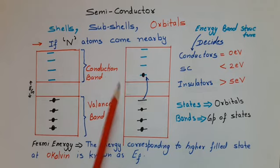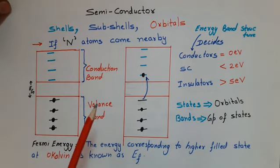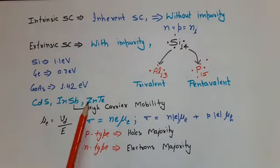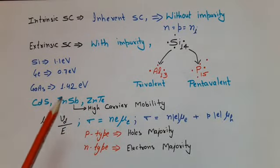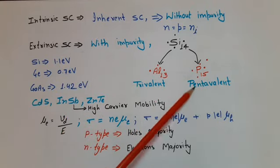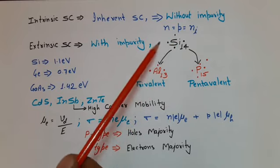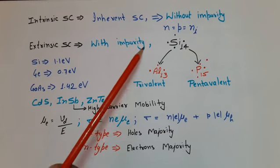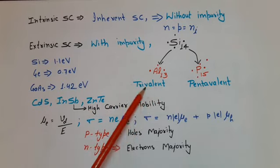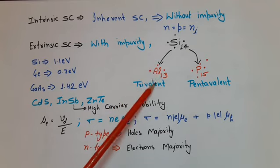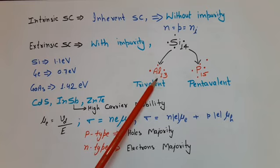Extrinsic semiconductors are those in which we add some impurity deliberately, to increase the conductivity of the semiconductor. The impurity added is either trivalent or pentavalent. Mostly used semiconductors are silicon and germanium, both of which have four electrons in their valence shell. If we add a trivalent impurity, for example aluminum, which has three electrons in its valence shell, then there will be a deficiency of one electron in the bonding process, and that deficiency will act as a hole.